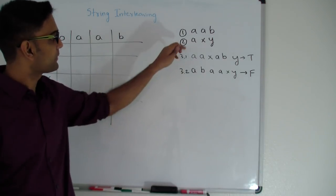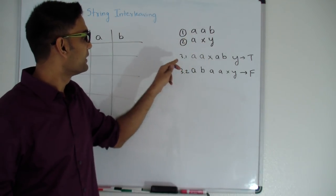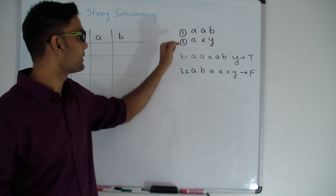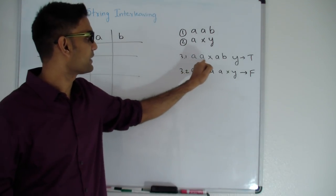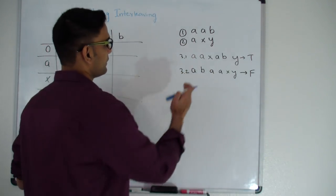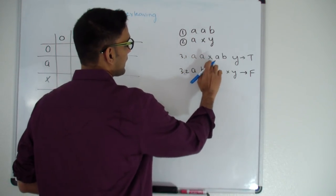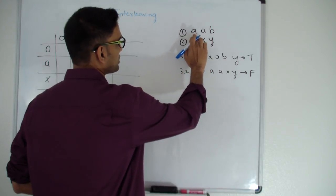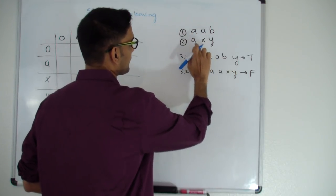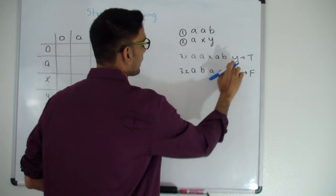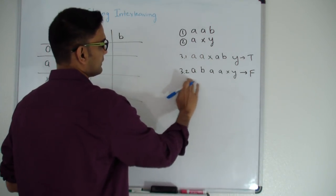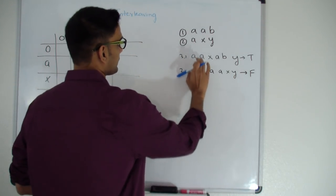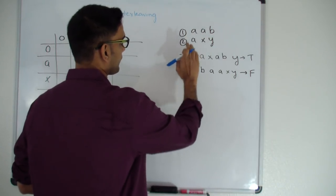For example, if the first string is 'aab' and the second is 'axy', you have to return true if the third string is entirely made up of these two and the order is preserved. So 'aaxaby' is entirely made up of characters from these two strings and the order in which 'aab' and 'axy' appear is preserved, so it returns true. Another string 'abaaxy' should return false because although it is made up of the characters, the order is not preserved.